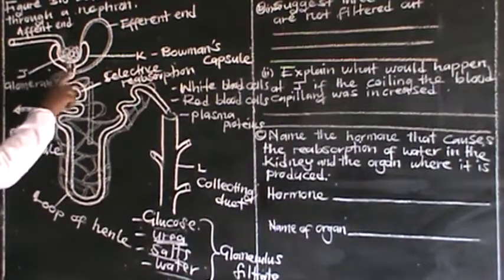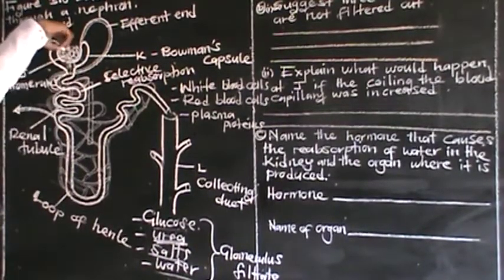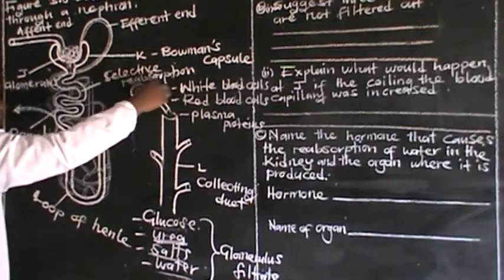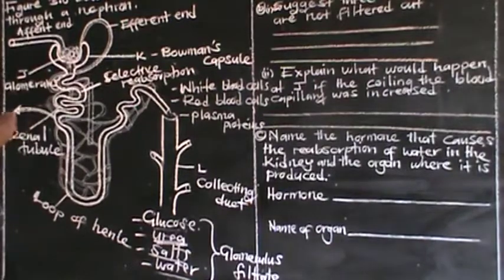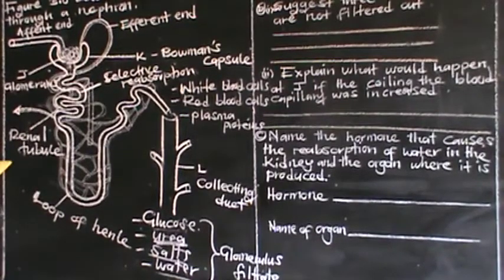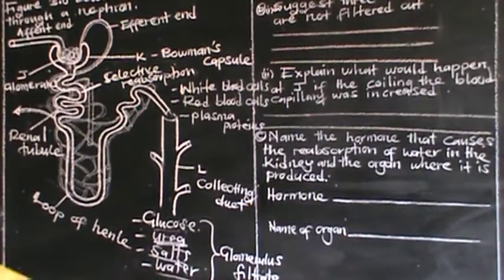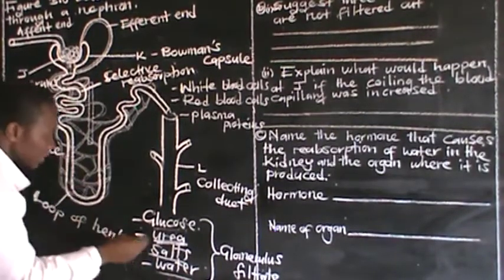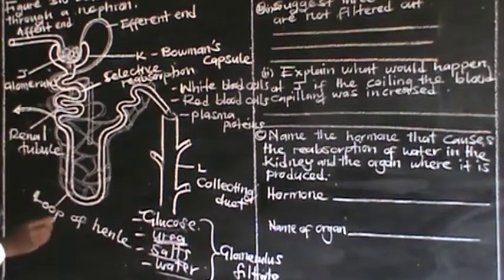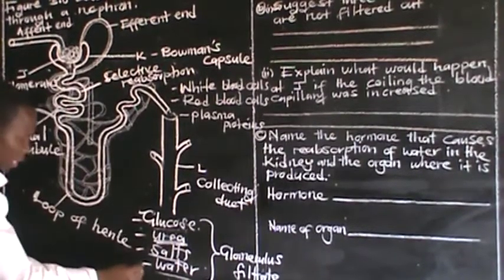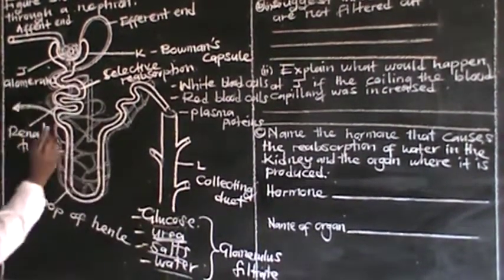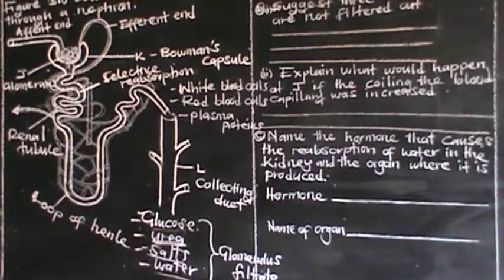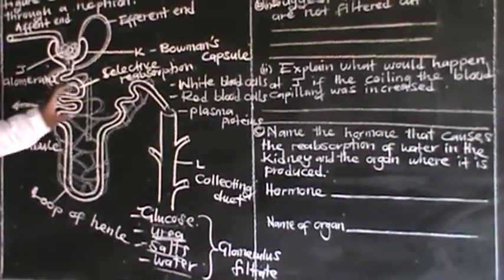Under selective reabsorption, useful substances are being reabsorbed back into the bloodstream. Useful substances such as glucose are very important, and some salts and water are also reabsorbed back into the bloodstream.